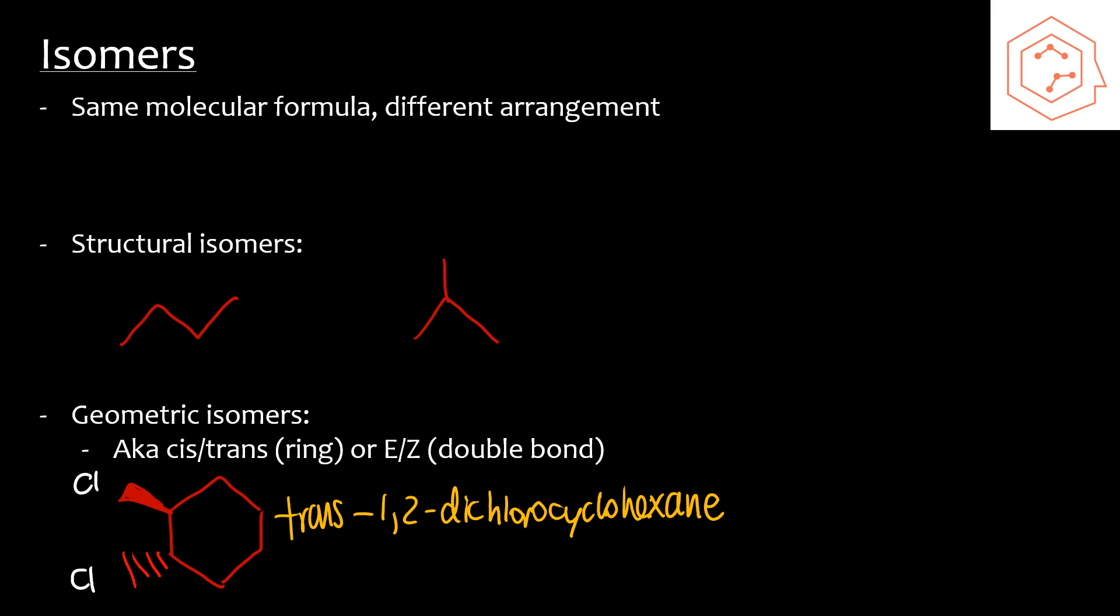Let's talk about the double bond now. Let's say we have 2-butene. In this case, the largest substituent groups are in the same direction, so this is Z-2-butene. But if I were to flip the methyl and the hydrogen so it would be like this, I would have E-2-butene.